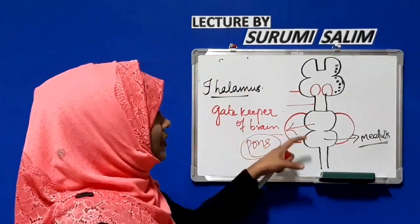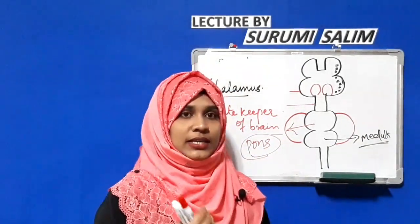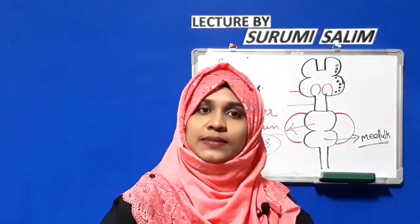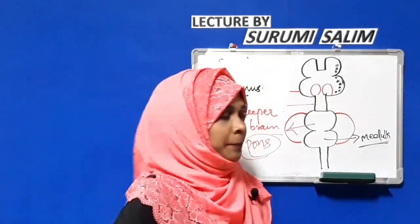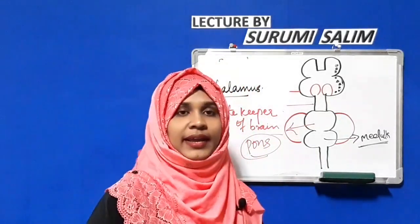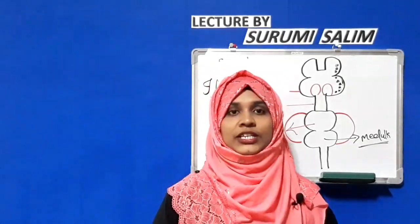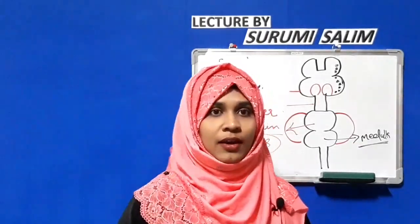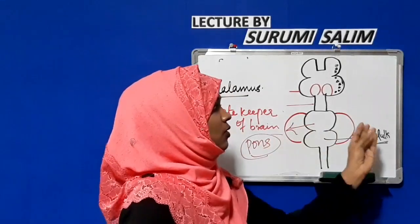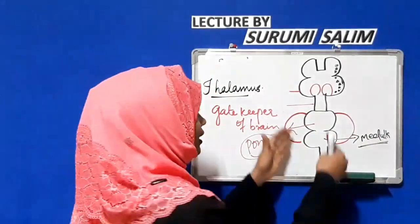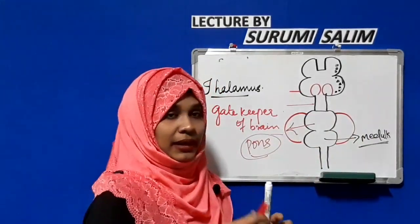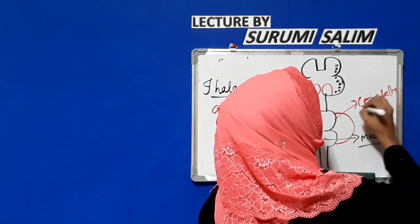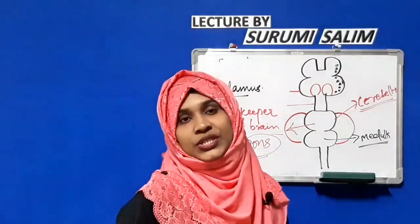The medulla oblongata lies between the pons and the spinal cord. It is the first portion of the brain to receive sensory impulses from the spinal cord. It helps in the maintenance of heart rate, depth and rate of respiration, and is responsible for reflexes like vomiting, sneezing, and coughing.